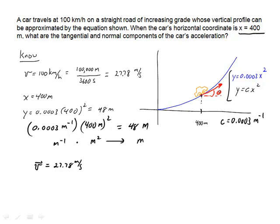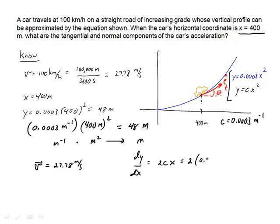How do I find this angle theta to determine the direction of E tangential? The direction of E tangential is parallel to the tangent to the curve, defined by the derivative of Y with respect to X — and so that's going to be 2CX. Here Y equals CX squared, so the derivative of Y with respect to X is 2CX. I know that X equals 400. So that's 2 times 0.0003 m⁻¹ times 400 meters. The m⁻¹ and meters cancel, giving a dimensionless quantity — which makes sense, since it's rise over run.